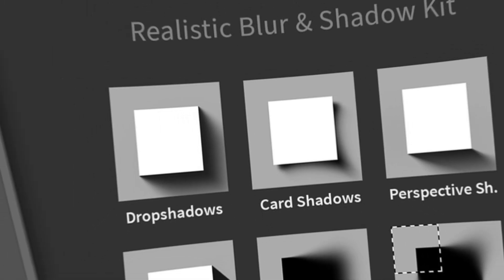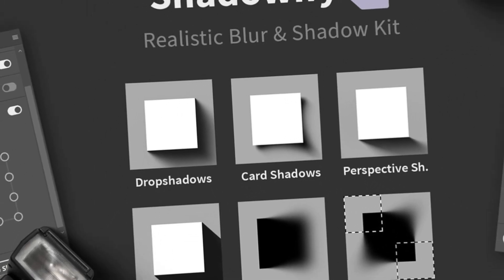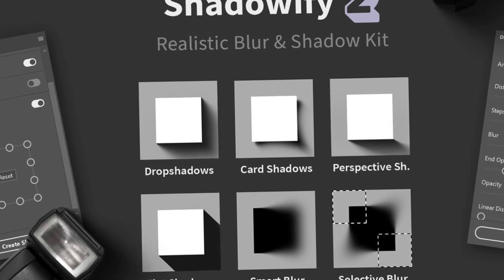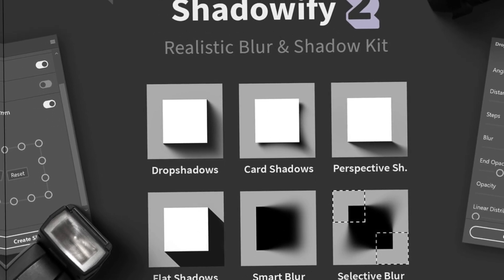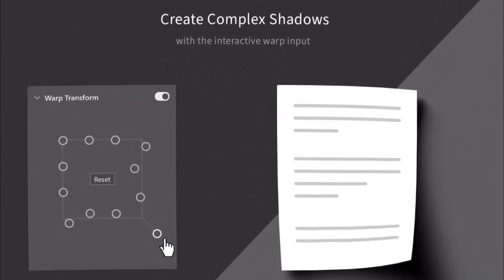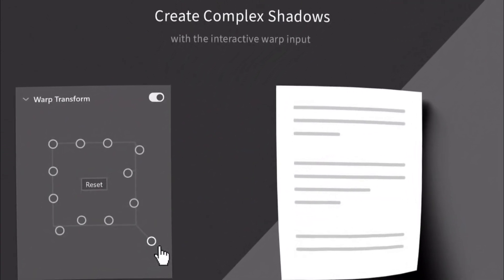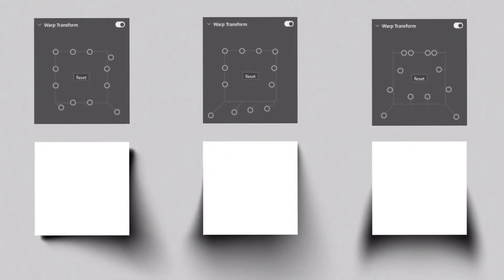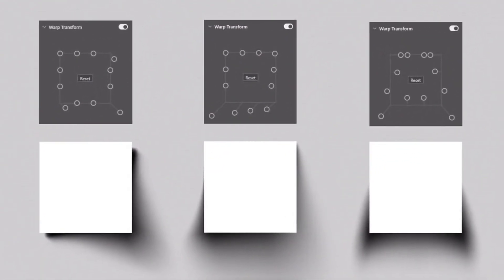Shadowify 2 is a real powerhouse of a plugin with six individual panels, carefully put together to simplify specific use cases the best way possible. All of them come with additional customization options to make the interface fit your personal workflow and preference. Of course, you can also save your favorite settings as presets for later use.